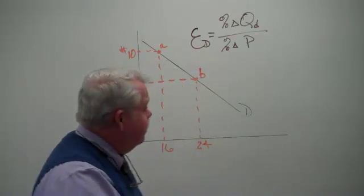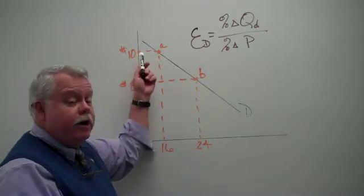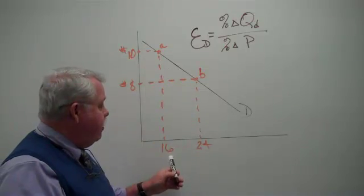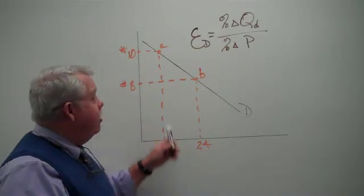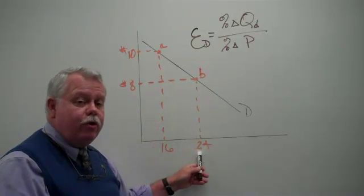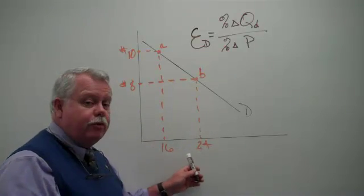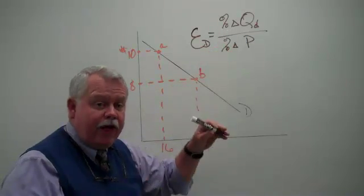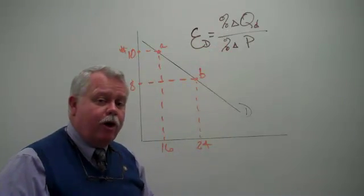Bear with me for a minute. Here's our demand curve. We're looking at a price of $10, at which people buy 16 units, or a price of $8, at which people buy 24 units. We want to measure the percentage change in the quantity. After that, we'll measure the percentage change in the price.